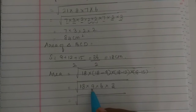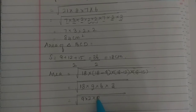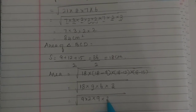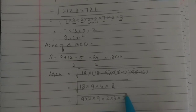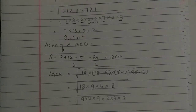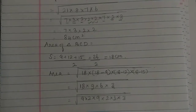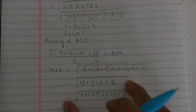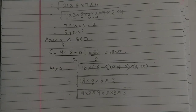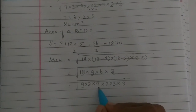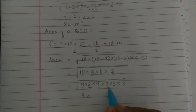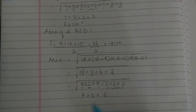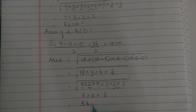Now we simplify: 18 is 9 times 2; 9 is 3 times 3; 6 is 2 times 3; and 3 is just 3. Taking pairs under the square root, we get 9 times 3 equals 27, and 27 times 2 equals 54. So the area of triangle BCD is 54 cm².